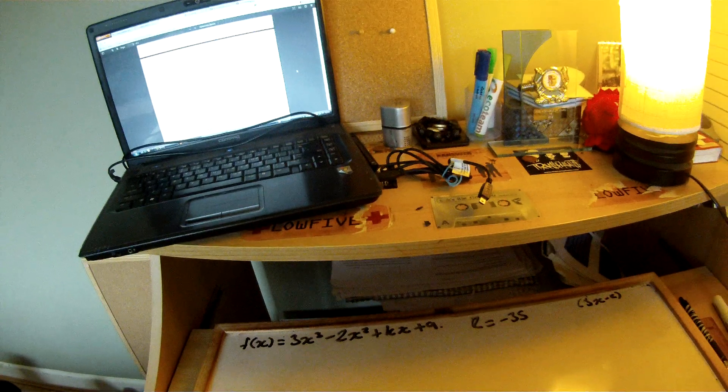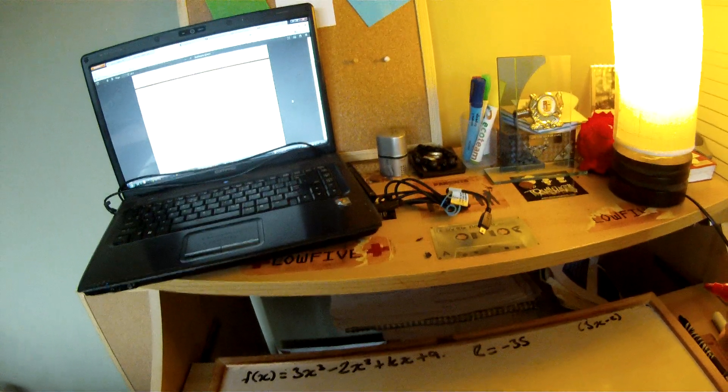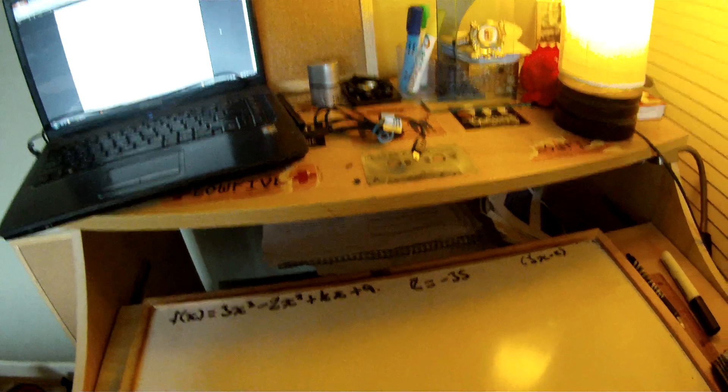Right, part B. They're asking you to find the remainder when f of x is divided by 3x minus 2.